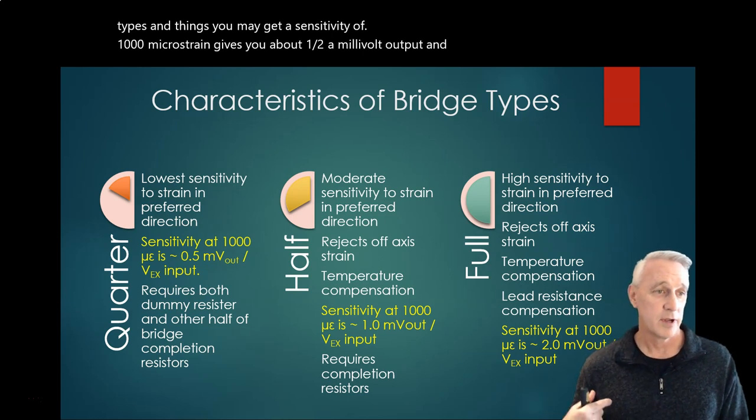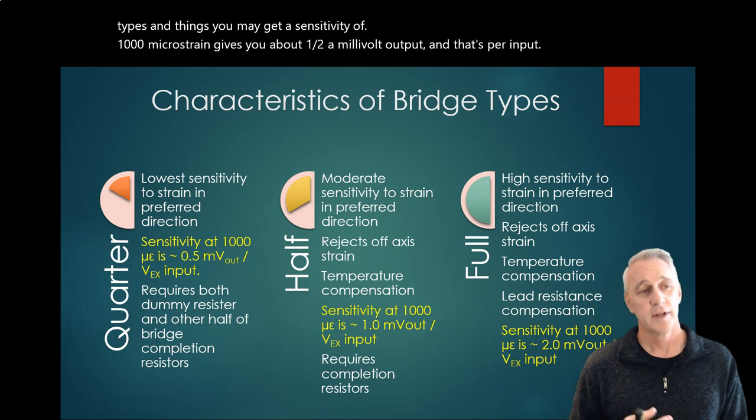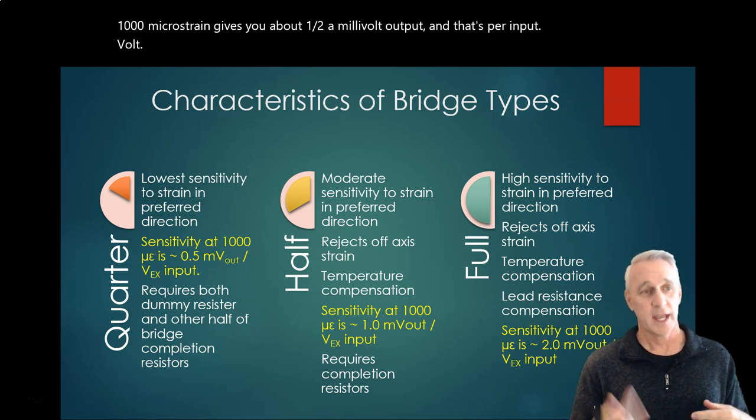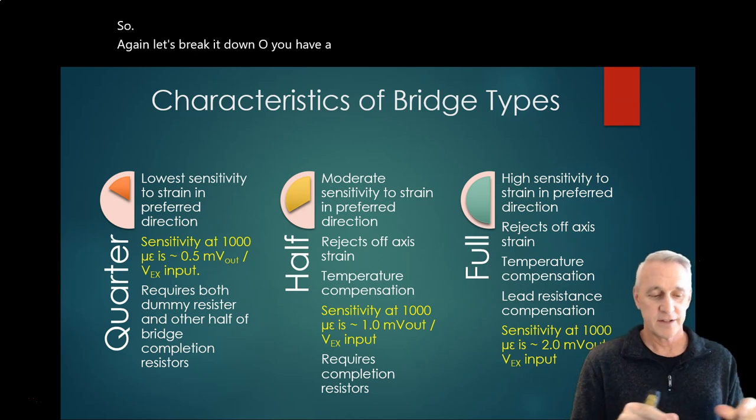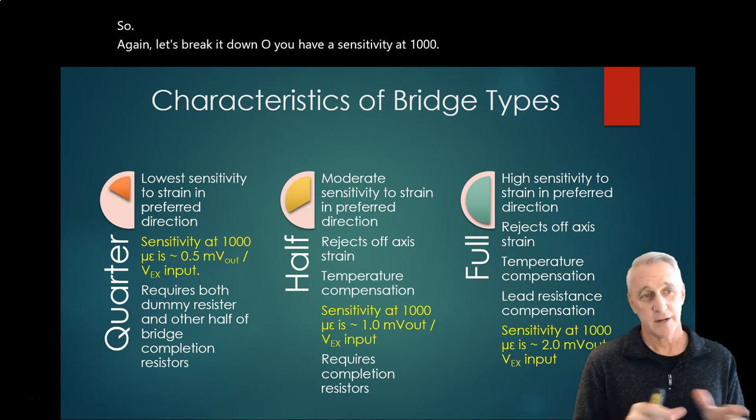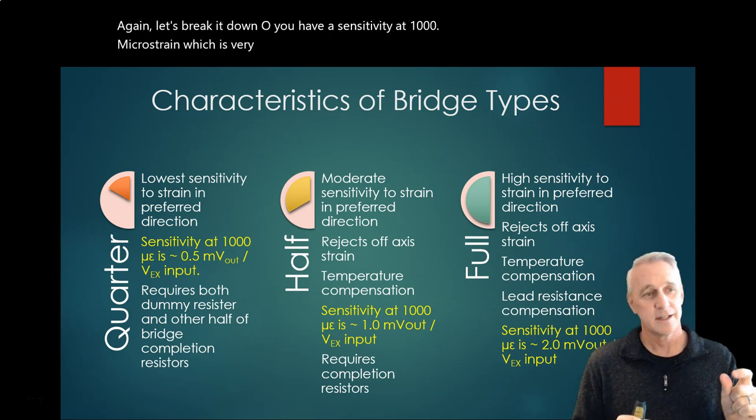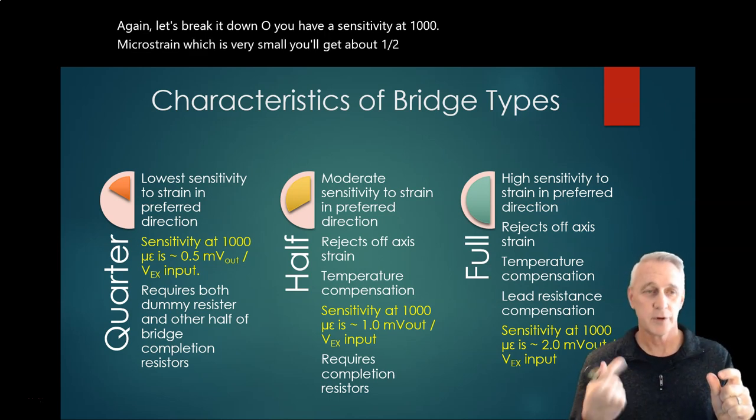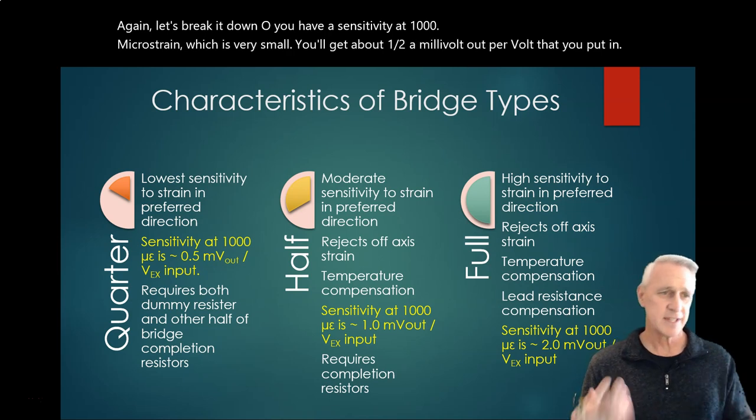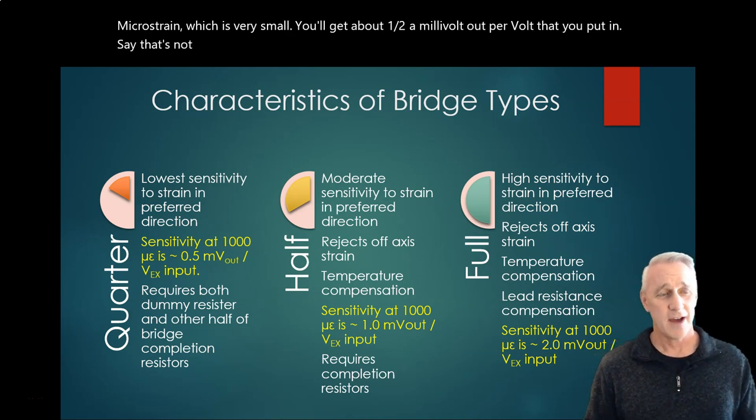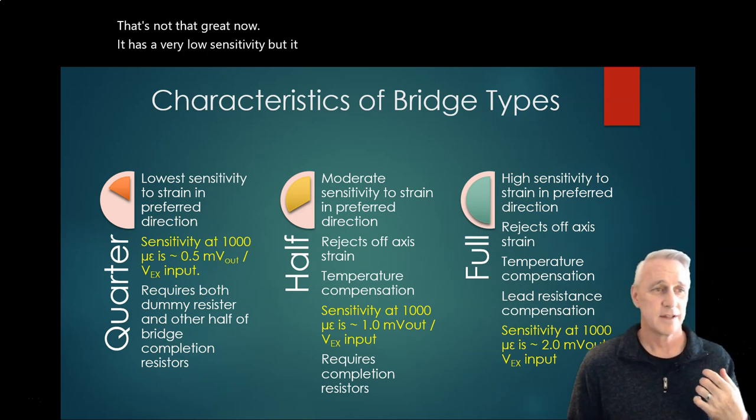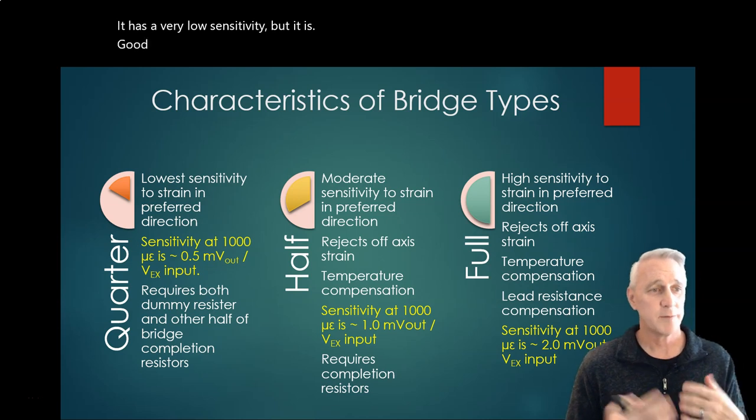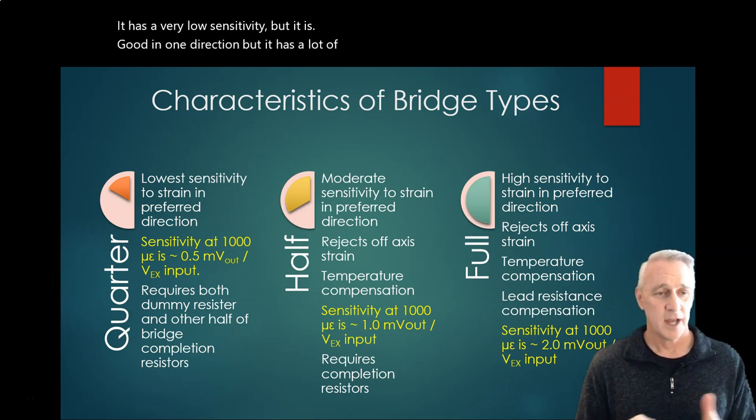So again, let's break it down. So you have a sensitivity at 1000 microstrain, which is very small, you'll get about a half a millivolt out per volt that you put in. That's not that great. Now, it has a very low sensitivity, but it is good in one direction. But it has a lot of other issues with dealing with noise and other things because it doesn't compensate for temperature changes. It doesn't reject off-axis issues. So it also is subject to all those things changing as well.